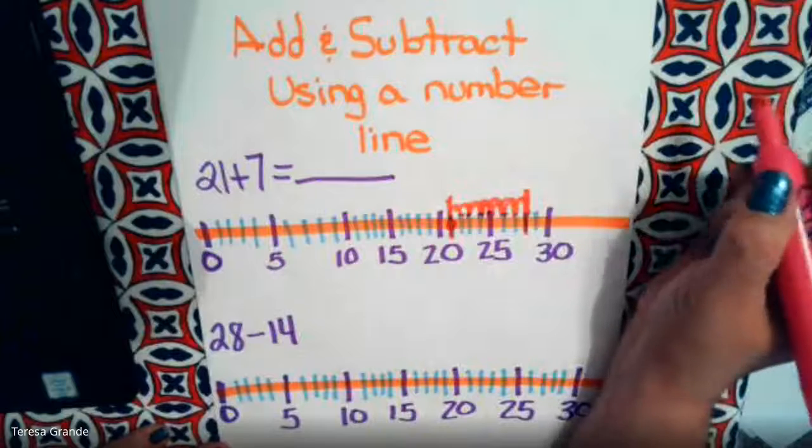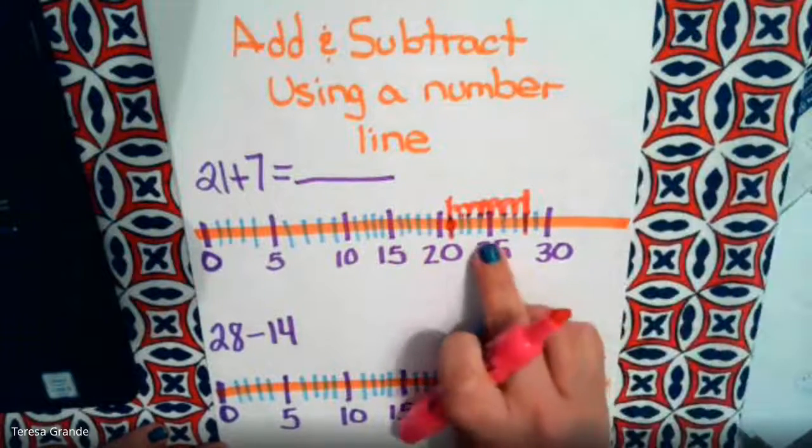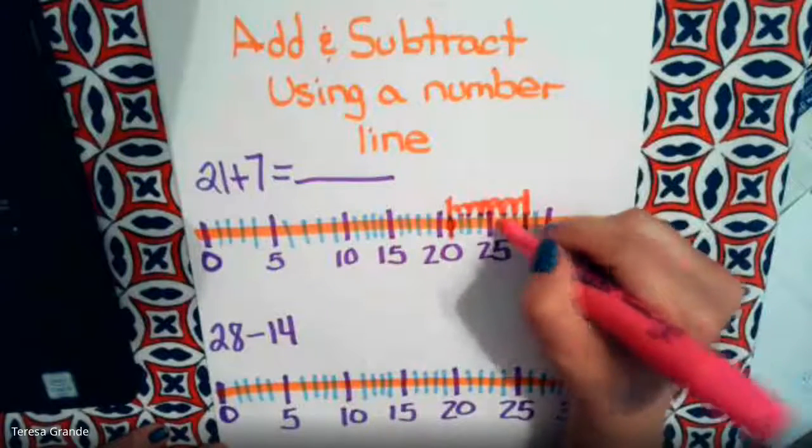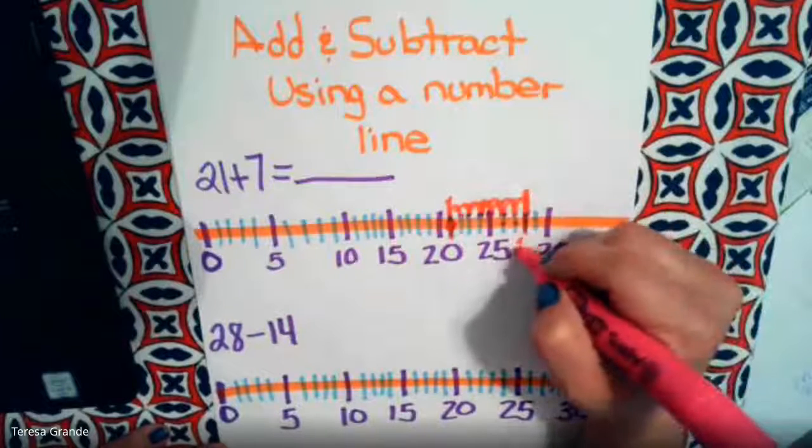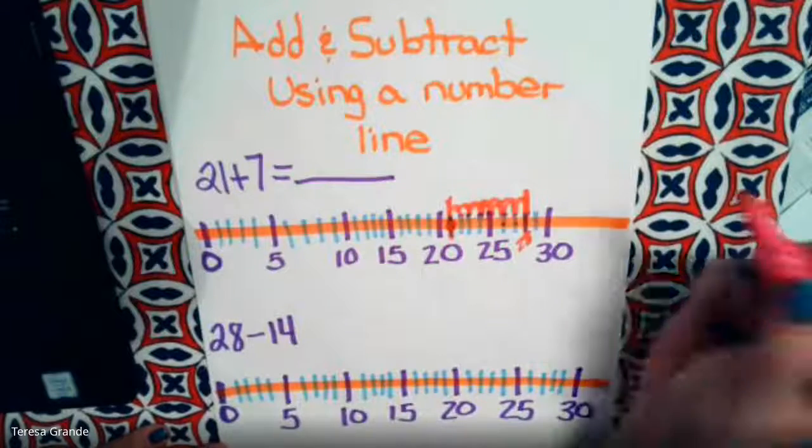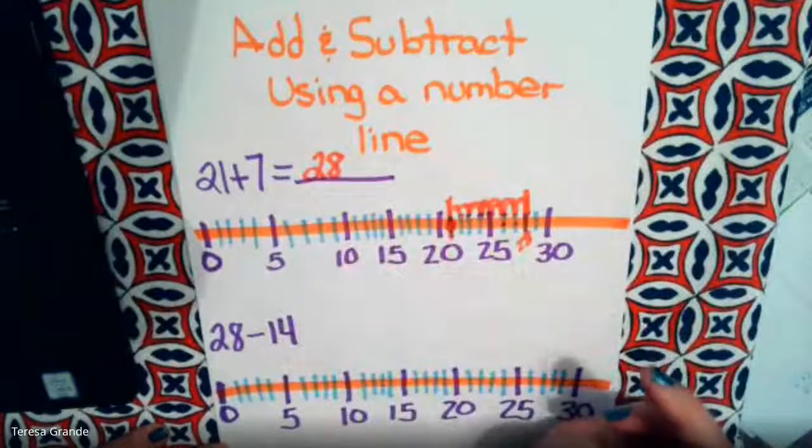So 21 plus 7, let's see, here's 25, 26, 27, 28. So the number here is 28. So 21 plus 7 equals 28.